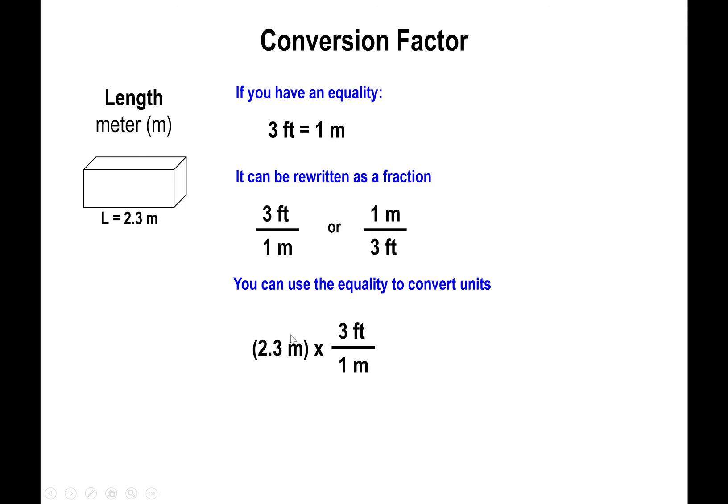The reason you want to pick the meters to be on the bottom is because when you multiply these two numbers, meters on the numerator and meters on the denominator will cancel out. This is equivalent to having 2 divided by 2. Meter divided by meter gives you 1 as well. Since you also have feet in this fraction, the moment the meters cancel out, the only unit left behind is feet.